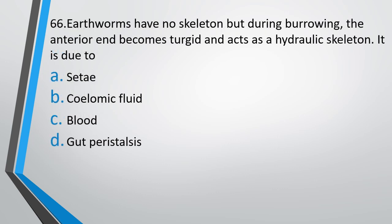Question number 66: Earthworm has no skeleton, but during burrowing the anterior end becomes turgid and acts as a hydraulic skeleton. This is due to: setae, coelomic fluid, blood, or gut peristalsis? The correct answer is option B — coelomic fluid.